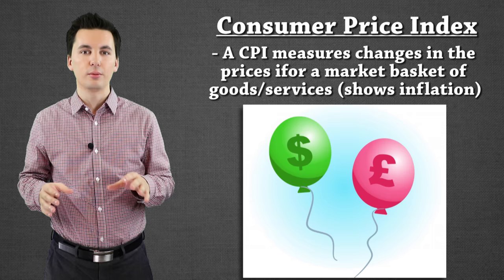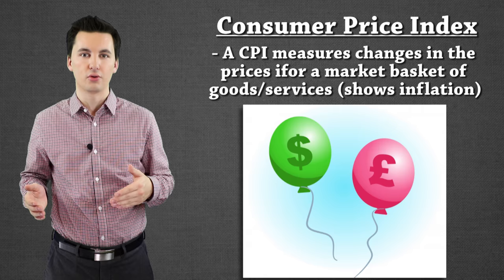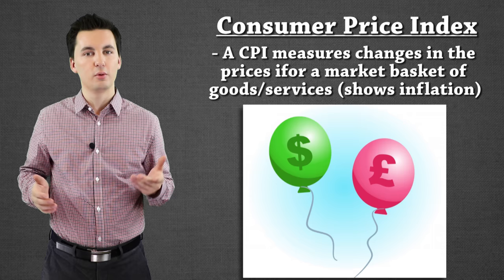Normally we'll have the same goods compared in a CPI every single year, so that way we can see how the value of those goods has changed. If those goods cost more, we've seen inflation. If they've cost less, then we might see deflation occurring. To calculate this out we first have to create a CPI.